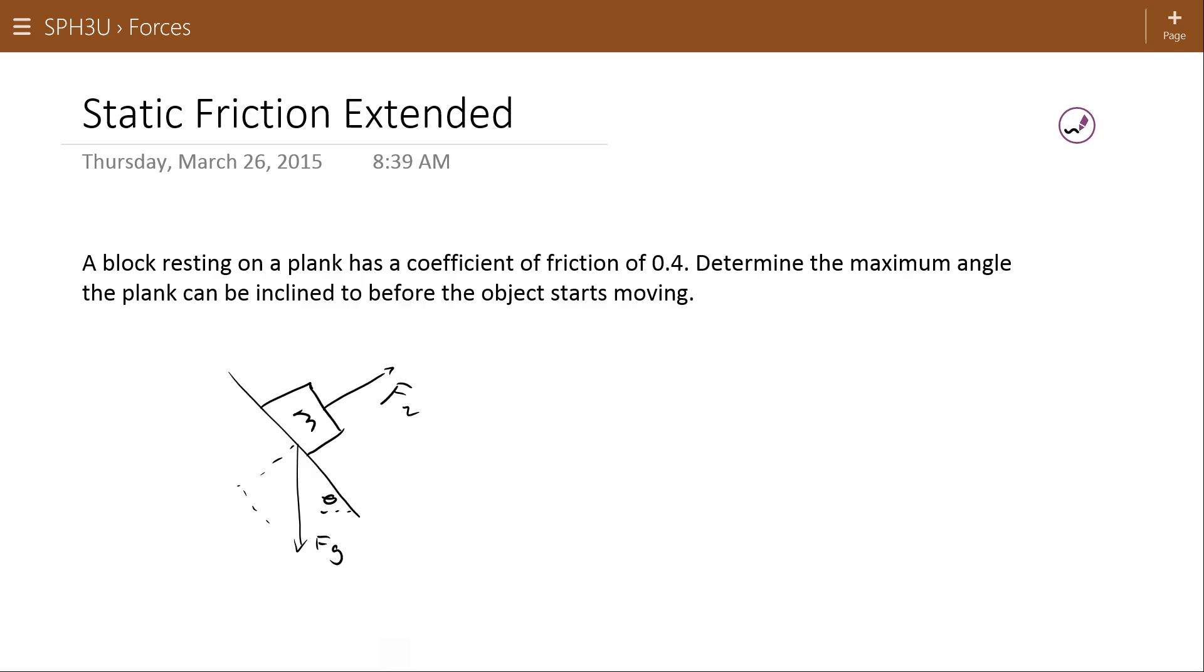This force of gravity can be divided into two components. If this is theta, this is 90 minus theta, and this is theta. The gravity will be 9.8m. This is my adjacent side. So the force of gravity that is perpendicular to the plane is going to be 9.8m cos theta. And the parallel component of the force of gravity, or the one that points down the plane, is Fg parallel, 9.8m sin theta.